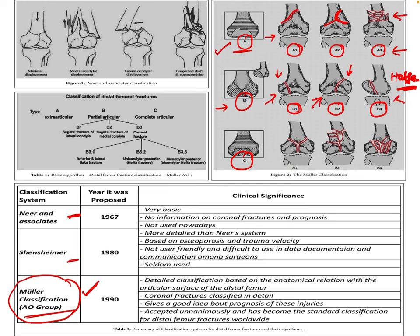In Type C we have articular extension. C1 is a simple fracture in the metaphysis with a simple fracture in the articular surface. C2 is a comminuted fracture in the metaphysis with a simple fracture in the articular surface. C3 is a combination of comminution at both the metaphysis and the articular surface.